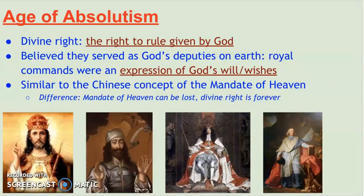And that key difference on the bottom — the difference from the mandate of heaven — we talked about that cycle where the mandate of heaven could be lost and a dynasty can lose that. Usually in Europe, those families held that power forever. They kept all of the ruling power in the family.